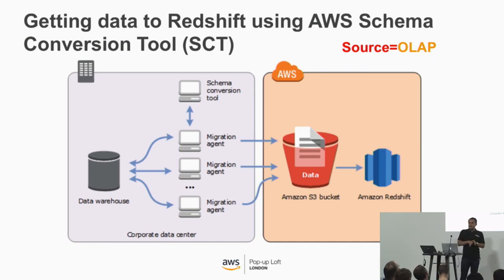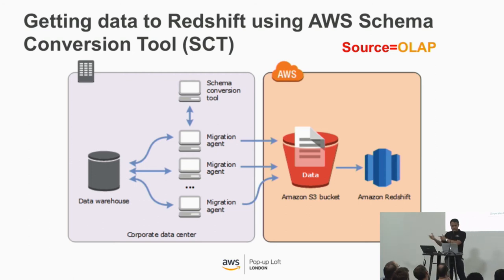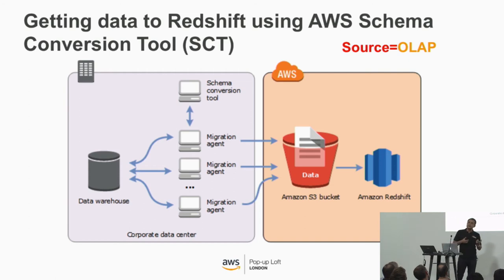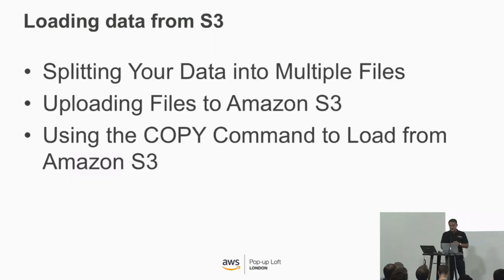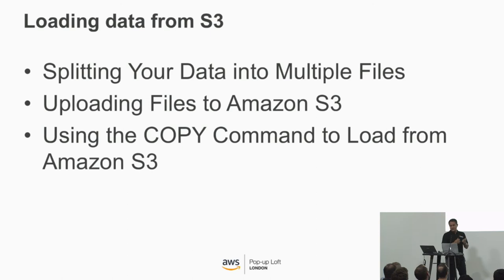If you are extending your on-premises data warehouse to the cloud or bringing data from an existing on-premises data warehouse to Redshift, a very good strategy is using SCT — the Schema Conversion Tool. SCT has agents you deploy that will work in parallel, doing small deltas and loading them to S3. It also manages the load from S3 to Redshift. The COPY command leverages Redshift's MPP architecture to read and load data in parallel from files in an S3 bucket. You can take maximum advantage of parallel processing by splitting your data into multiple files and setting distribution keys on your tables.